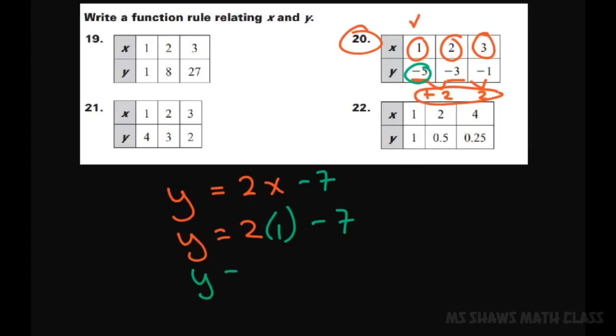Y equals, we're doing the second one, 2 times my X is 2 minus 7. That gives me 4 minus 7, which is negative 3. So that checks, and let's check again with that one.